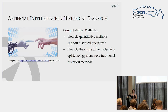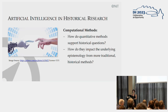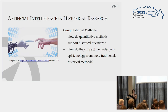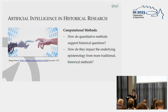As you probably all know, artificial intelligence is rapidly advancing text and image classification in many disciplines. With the progressing digitization of cultural heritage, AI increasingly also finds application in arts and humanities. But what we are interested in exploring is how can these quantitative methods support historical research and historical research questions? And how does AI impact the underlying epistemologies stemming from more traditional historical methods?